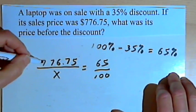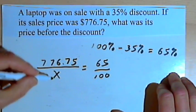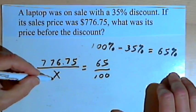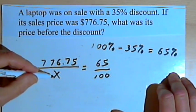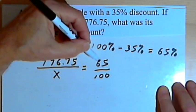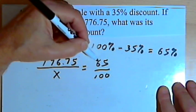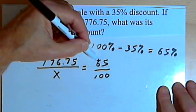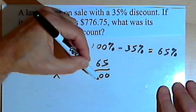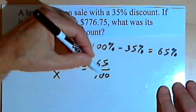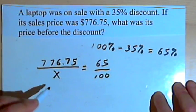In other words, the sales price over the original price x is equal to the amount after the discount in terms of percent, 65, over the 100%, the original amount. So we want to solve this for x. I've got a fraction on either side of an equation, so I can cross-multiply to solve that.